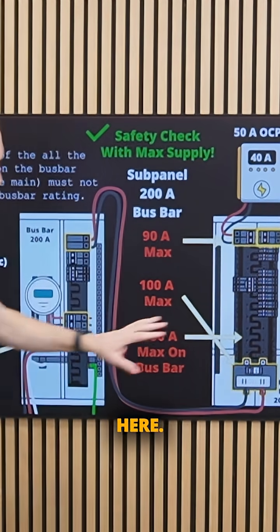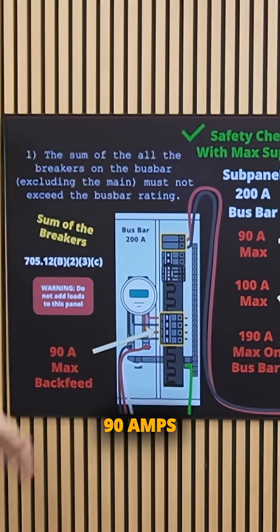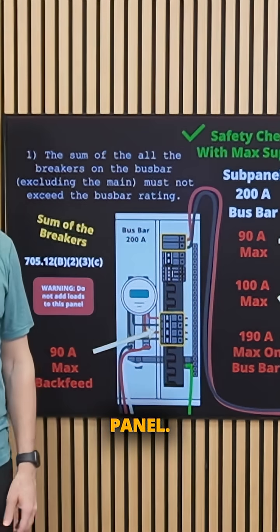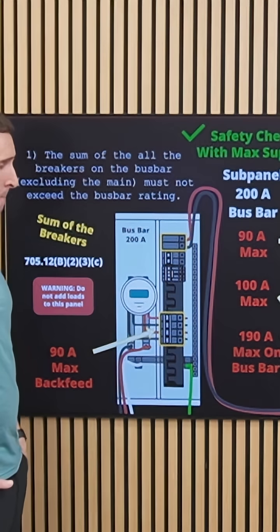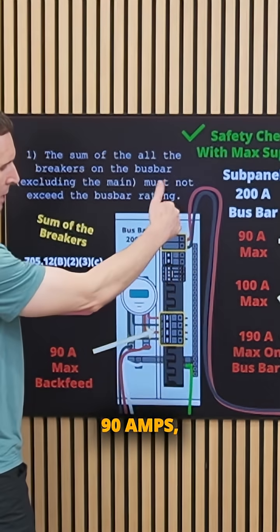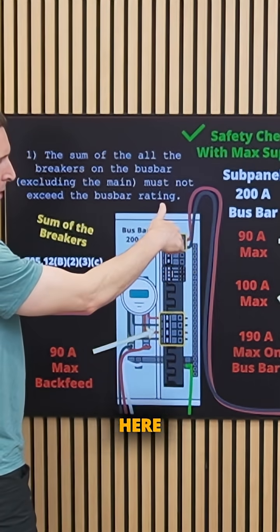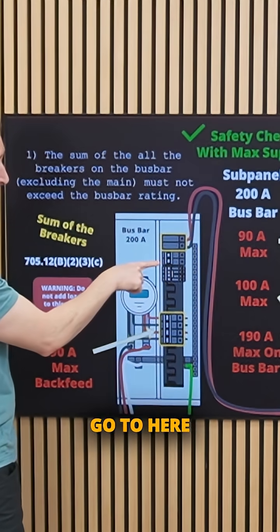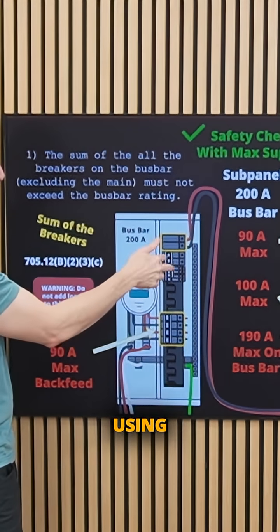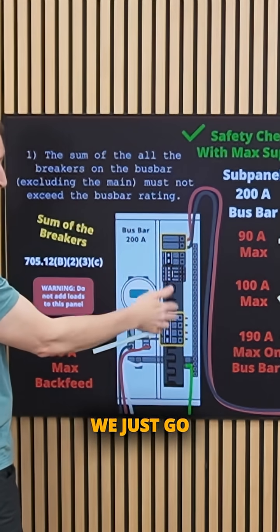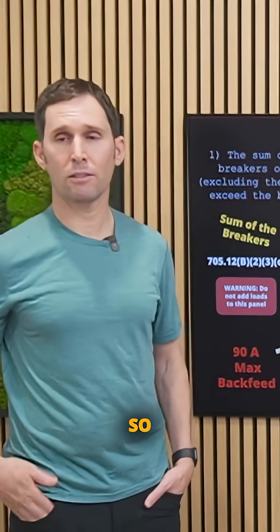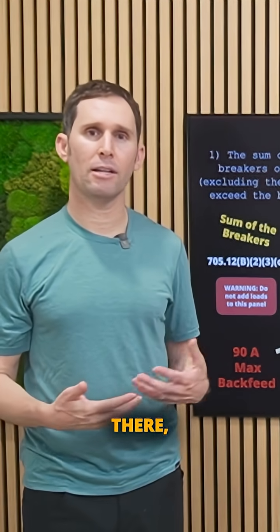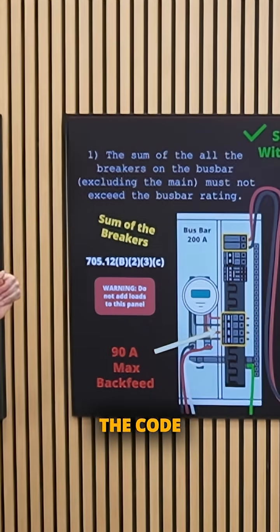Now let's look at this main panel. We're back-feeding 90 amps here because the total loads and supply never exceed 200 amps. Where does that 90 amps go? It lands on the bus bar. It can feed the loads on the panel, and if those loads aren't on, it flows through the bus bar, through the 200-amp main breaker, and back to the grid. There are no safety issues and no code issues — we're using the other piece of code: the sum of the breakers rule.